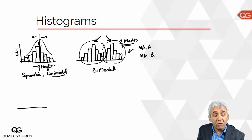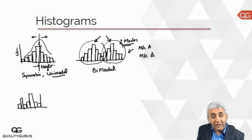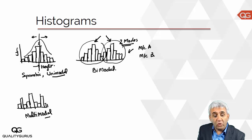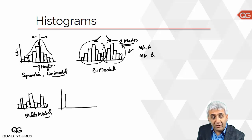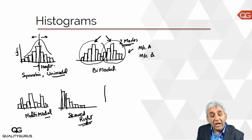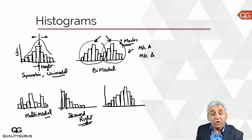After bimodal, you might have a multimodal histogram with multiple peaks — one here, another here, another there. Your histogram might also be skewed. A right-skewed histogram has more frequency on the left and less on the right. The opposite is a left-skewed histogram, with more frequency on the right tapering off to the left. A distribution curve overlay makes these shapes clearly visible.